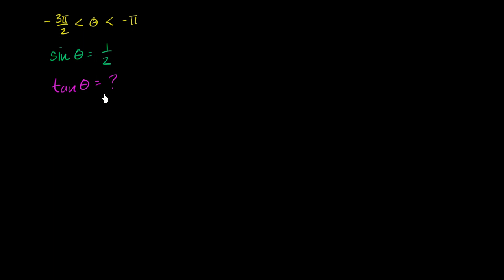I encourage you to pause the video and try this on your own. In case you're stumped, here's a hint: you should use the Pythagorean identity — the fact that sine squared theta plus cosine squared theta is equal to 1.